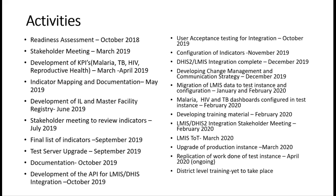Developing the interoperability layer, master facility registry, and automated data exchange platform started around June 2019 and ran concurrently with other project activities. A follow-up meeting reviewed the indicators, and a final list was produced by September 2019. Because of the nature of the LMIS indicators, we needed to use predictors, which were only available in version 2.32. We upgraded our test instance to version 2.32, documented the process, and on the OpenLMIS end there was API development to ensure compliance with the data exchange platform. User acceptance testing for integration started in October 2019, and we considered the integration fully complete in December 2019 when we were successfully able to push data from OpenLMIS into DHIS2.